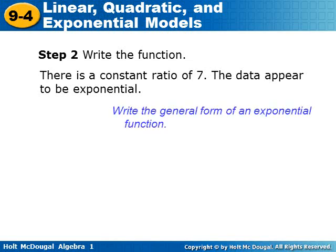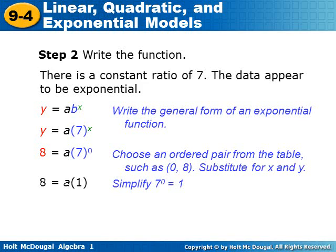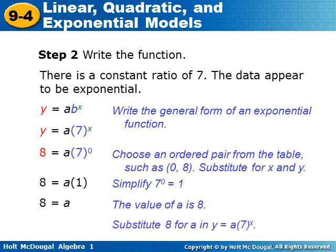Write the general form of an exponential function: y = a · b^x. Seven is the constant ratio, so that's the b value. To find a, choose an ordered pair from the table — we use x = 0, y = 8 — and substitute. Seven to the zero power is one, so we get 8 = a · 1, meaning a = 8. Substituting back, with b = 7, we get the equation y = 8 · 7^x.